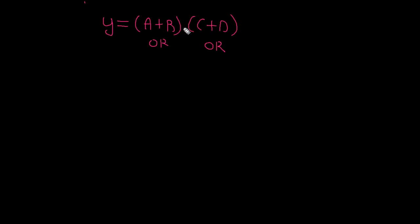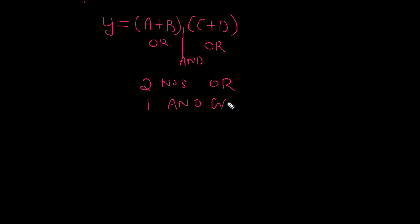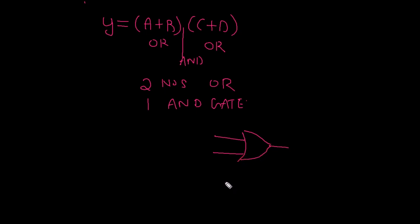So we have one AND function and two OR functions. To build the circuit diagram for this expression, we need two OR gates and one AND gate. Let me draw the circuit diagram for this expression. I will take one OR gate here, and I will take one more OR gate here.